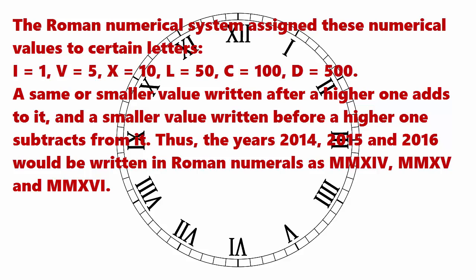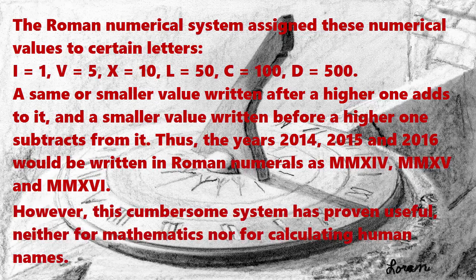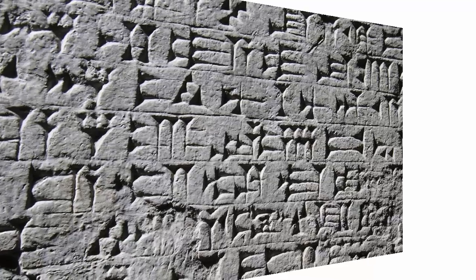The Roman numerical system assigned these numerical values to certain letters: I equals 1, V equals 5, X equals 10, L equals 50, C equals 100, and D equals 500. A same or smaller value written after a higher one adds to it, and a smaller value written before a higher one subtracts from it. Thus, the years 2014, 2015, and 2016 would be written in Roman numerals as MMXIV, MMXV, and MMXVI. However, this cumbersome system has proven useful neither for mathematics nor for calculating human names.